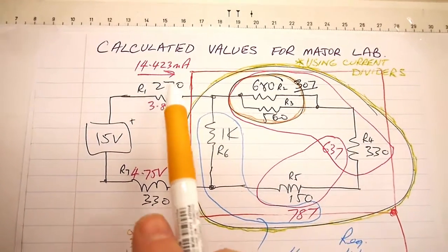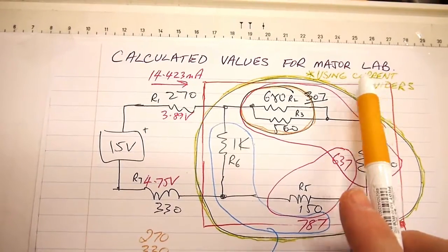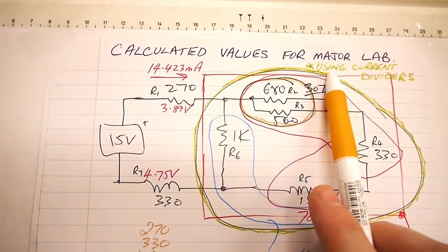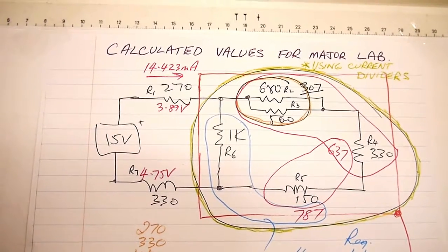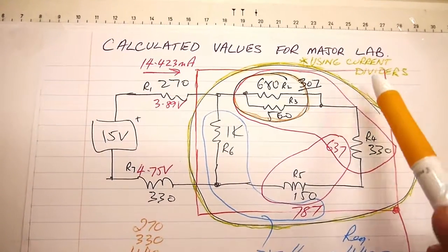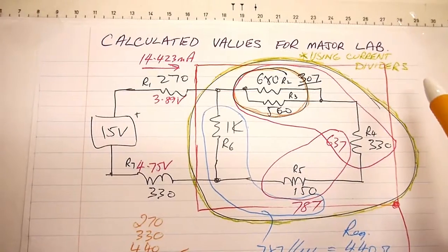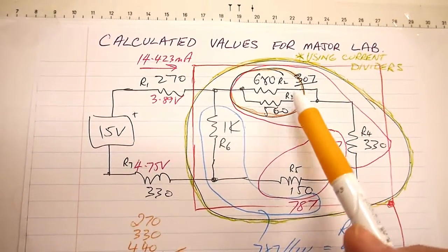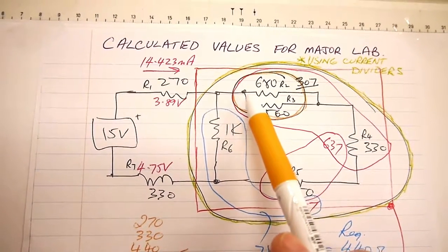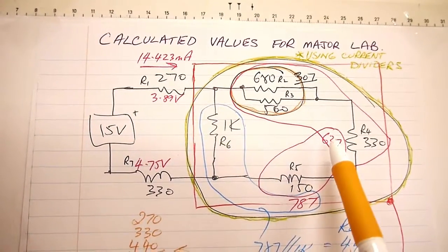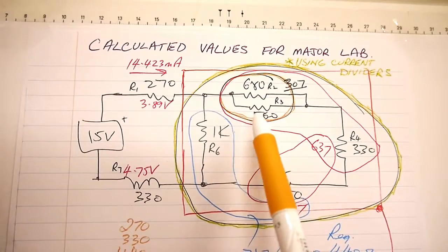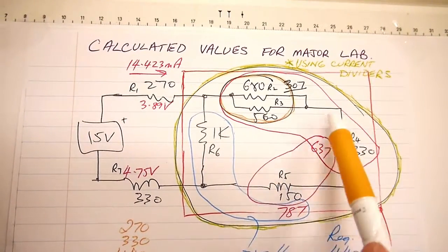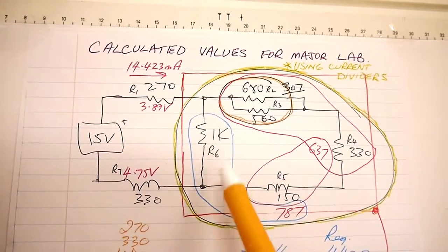I've said this is the calculated values for the major lab, asterisk using current dividers, because if we do it like Schuster it would be with basic Ohm's law. In this case though, I've gone ahead and worked out the different currents in the different branches, and then I've been able to use those currents with V equals I times R to get the voltages across individual components.